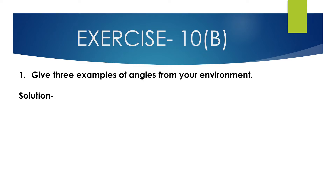Now we will solve question number 1: give 3 examples of angles from the environment. Sun rays falling on the ground make angles. The pillar of a building, at a corner area, forms angles — that is, right angles. These are also examples from our environment.